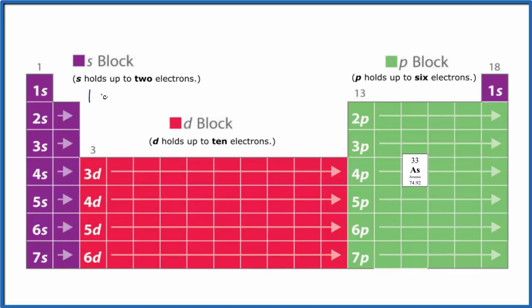1s1, 1s2, that's full. Then we go to the second energy level, that's 2s1, 2s2. After the s, we're over to the p: 1, 2, 3, 4, 5, 6. P holds up to 6. Then third energy level: 3s2, 3p6.